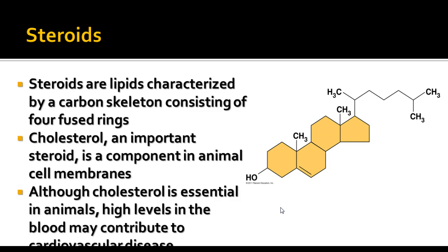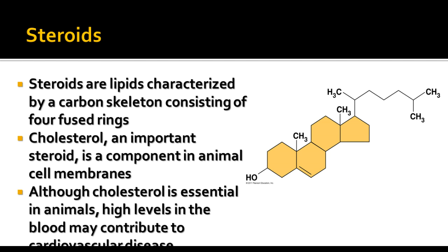The third major group of lipids is the steroids, characterized by a carbon skeleton consisting of four fused rings. An important steroid component of membranes is cholesterol, which is found in animal cell membranes in particular and is essential to them. However, high levels of cholesterol in your bloodstream can contribute to cardiovascular disease, commonly seen in people who eat a lot of fatty animal products like steak. There are other steroids as well, such as steroid hormones.